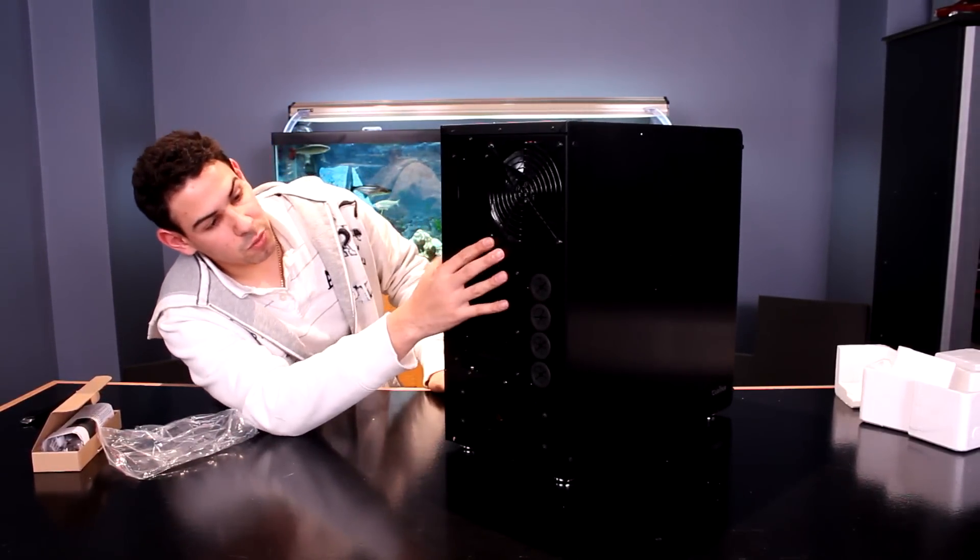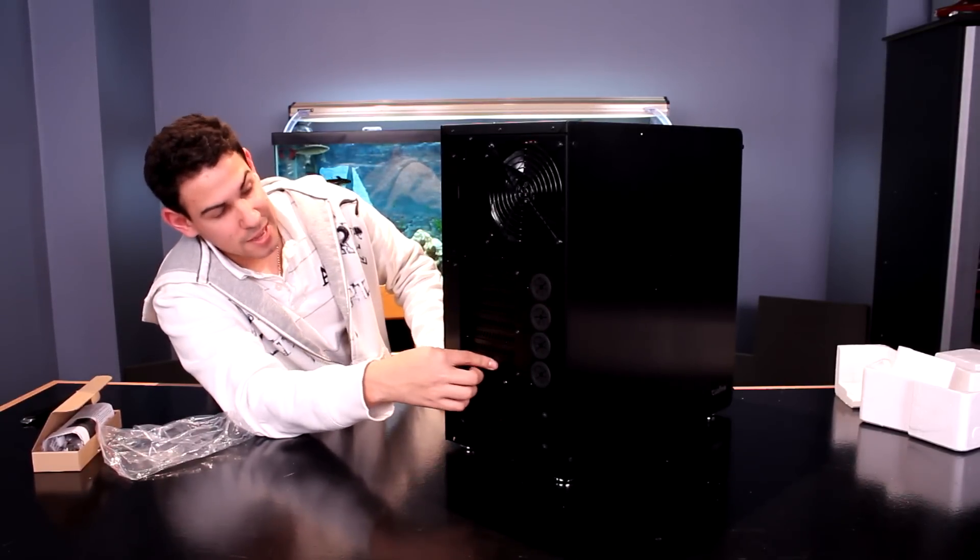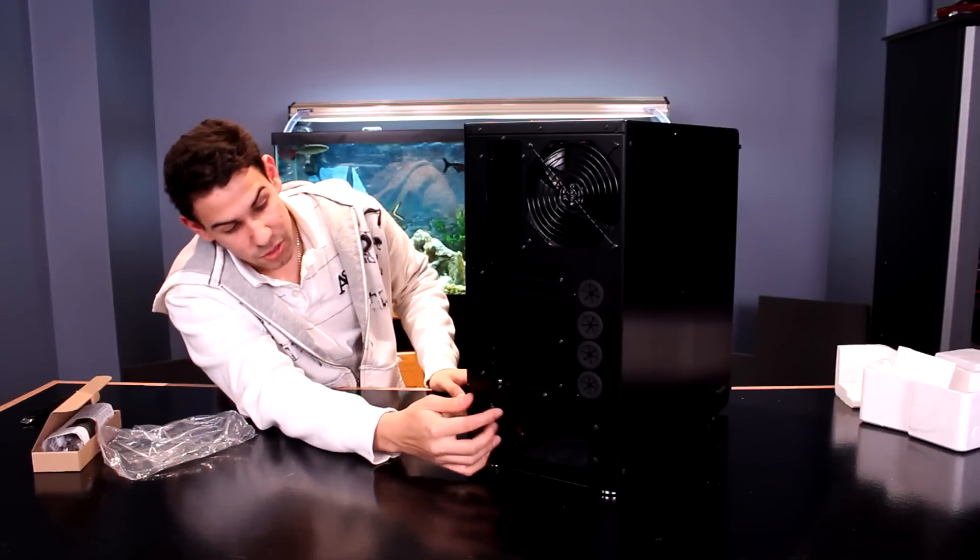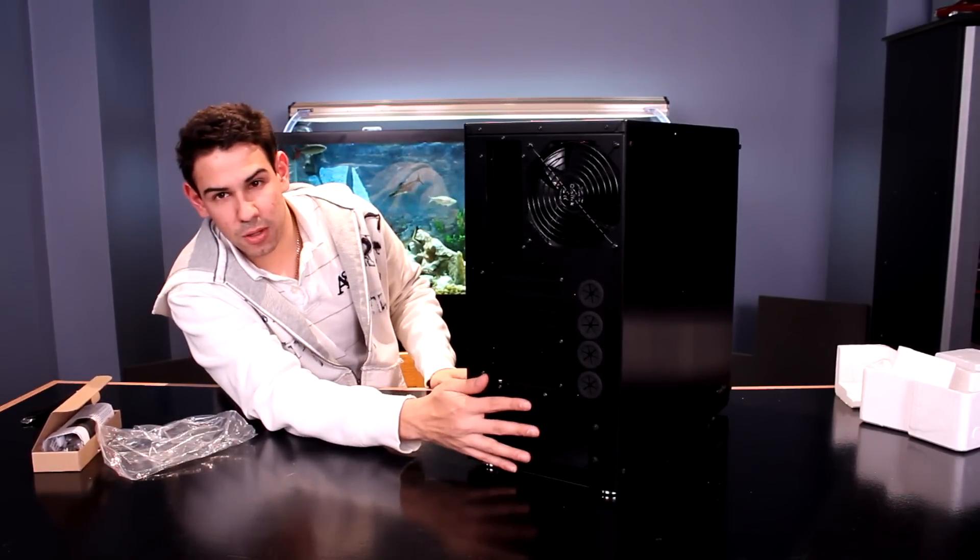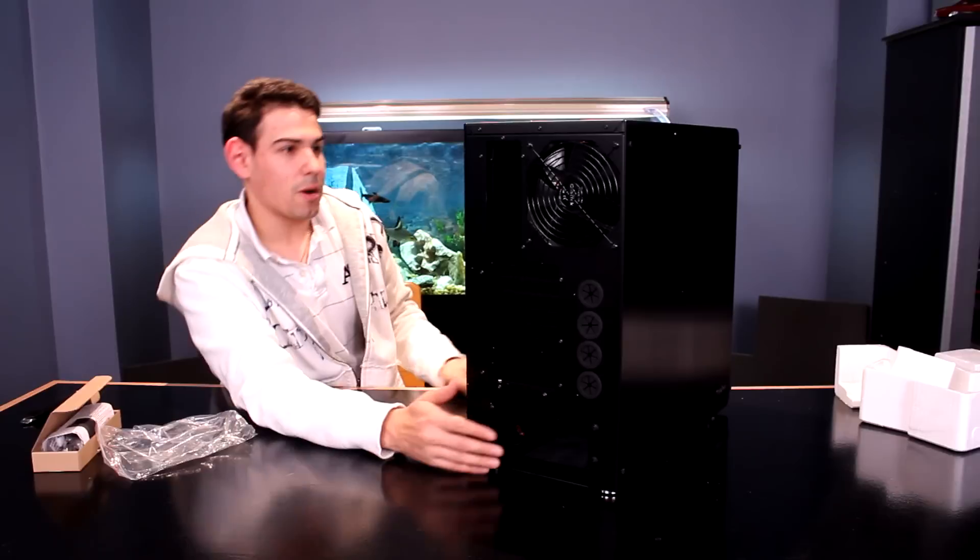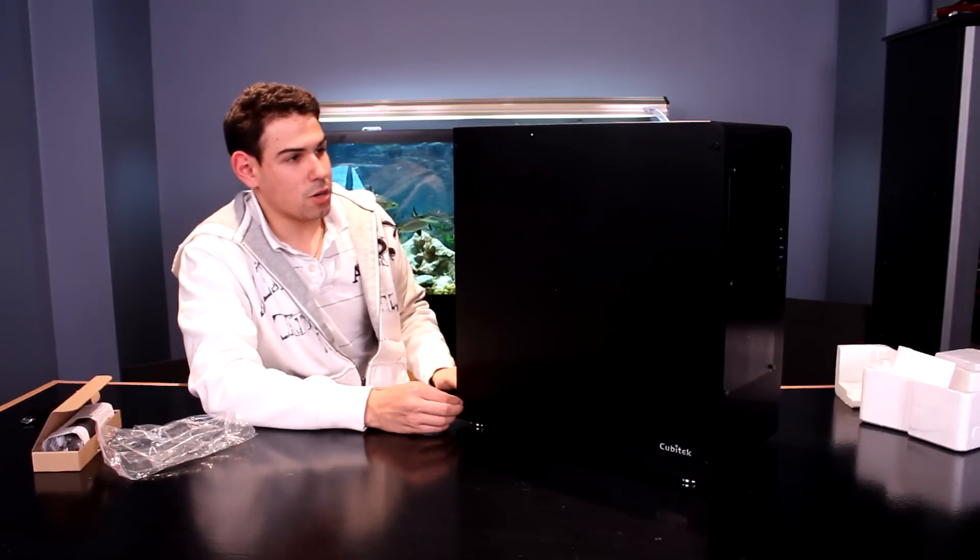Looks like no real wasted space on this case. On the back here we find a 140mm fan, four water cooling tubes, eight expansion slots, where your I/O shield plate will get installed. The standard PSU will get installed here, your ATX one on the bottom. You can also remove this plate, so you install the plate first then you slide in your power supply, which is great.